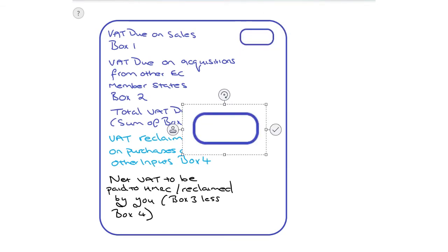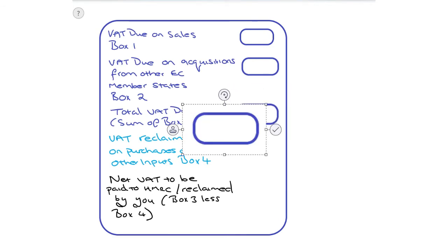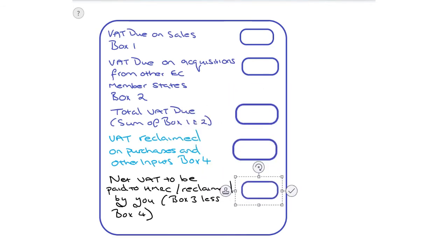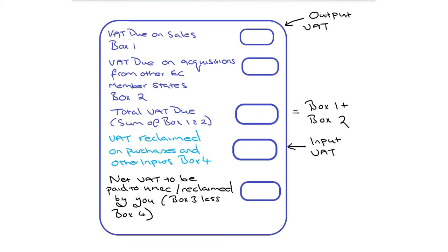So this is box 3 less box 4 in effect. So if your amount of purchases outweighs the amount of sales that you've got on the VAT return, then you're due a reclaim from HMRC. But if your sales are more than purchases, then you owe HMRC. So if you just have a look at any VAT return, it will look exactly like that. The boxes might be a little bit straighter, but you get the idea.